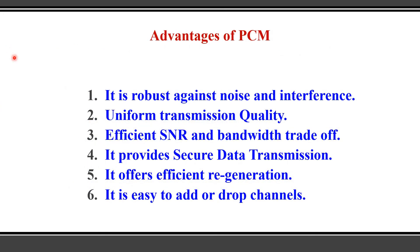Advantages of PCM: it is robust against noise and interference; it provides uniform transmission quality; it offers an efficient signal-to-noise ratio and bandwidth trade-off; it provides secure data communication by performing encryption and decryption; it offers efficient regeneration — when transmitting over long distances, regenerative repeaters maintain high signal-to-noise ratio and improve signal quality; and it is easy to add or drop channels.